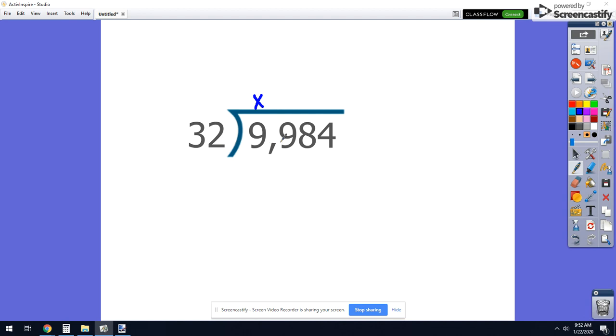Does 32 fit into 99? It definitely does. 32 times 2 equals 64. So I'm going to go ahead and say it fits in there 2 times. I'll subtract 64 away from 99. 9 minus 4 is 5, and 9 minus 6 is 3. It gives me 35.